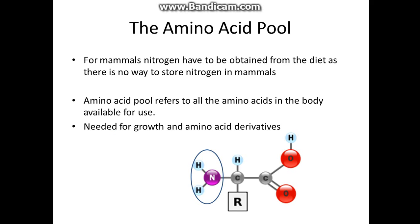Hi, in this episode I'm going to discuss amino acid metabolism. So first of all, what are amino acids and the amino acid pool? An amino acid is basically carbon with a carboxylic acid on one side and an amine group on the other side, with an R group which could be anything. Generally an amino acid has hydrogen at that position.